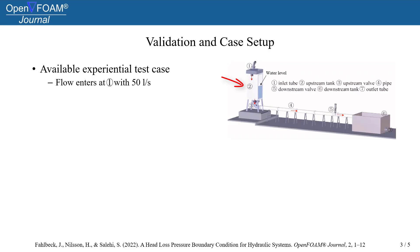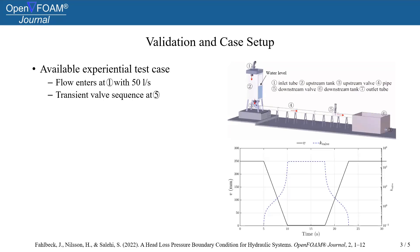So we will have a water level that is allowed to vary during the experimental test. And in the test, a transient valve sequence is evaluated according to the following graph. It's the valve that is located at position 5 that is changing through this sequence.